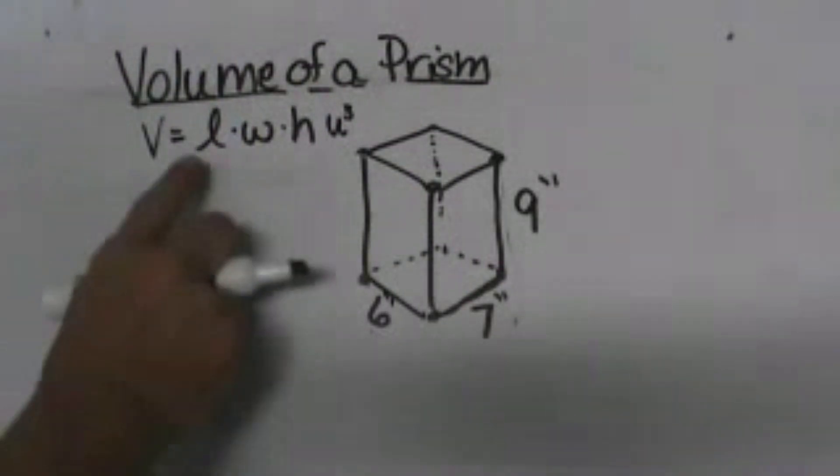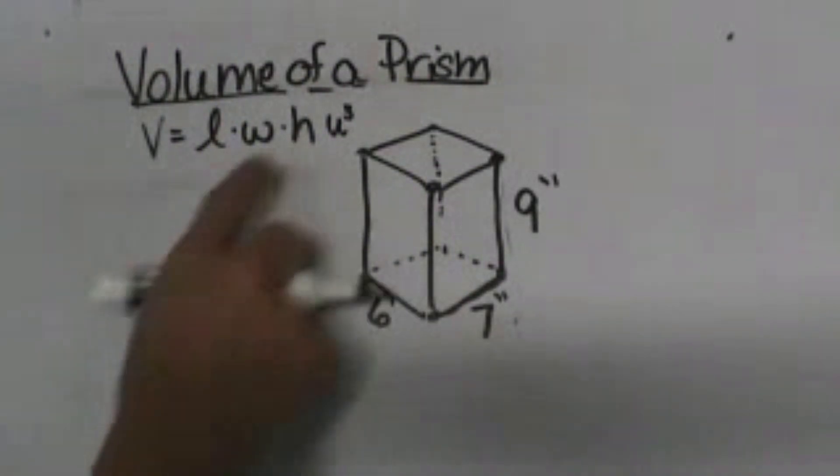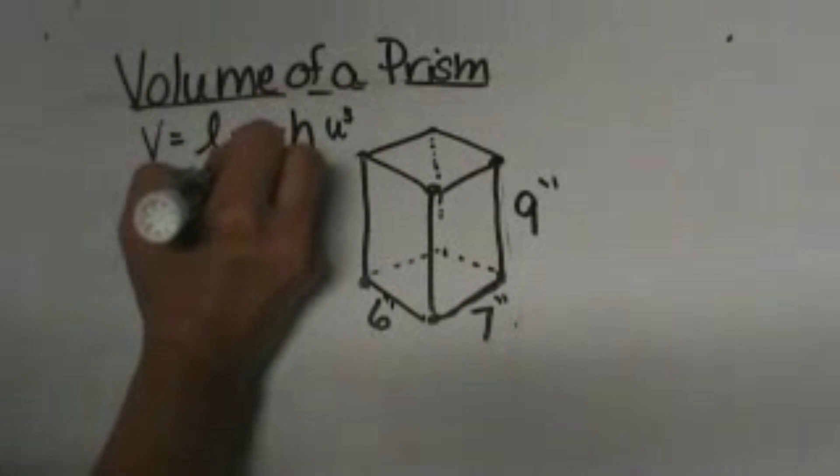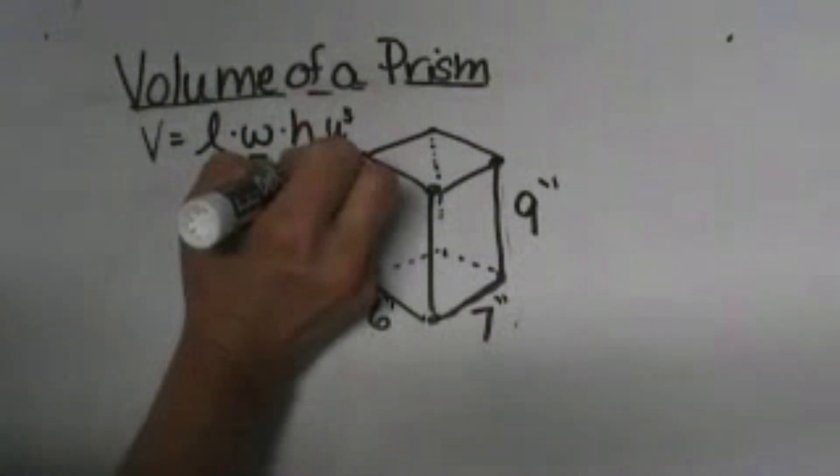To find the volume, we're going to take the length times the width times the height. Let's plug in 6 times 7 times 9.